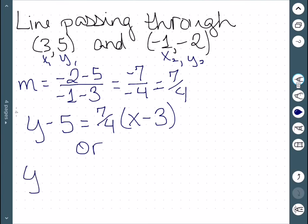If we were to use the other point, I would have y - (-2) = (7/4)(x - (-1)). And while these equations look very different, they're actually the same thing and represent the exact same line.